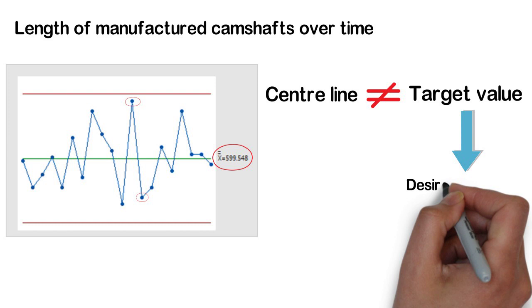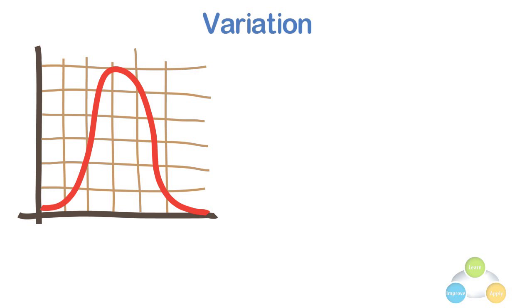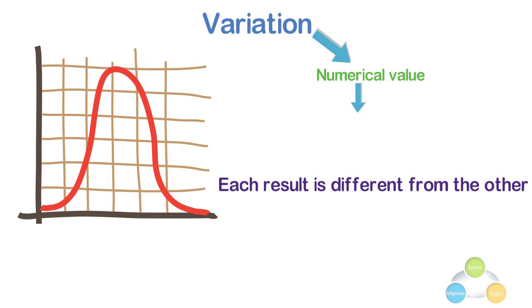Variation. Every piece of data which is measured will show some degree of variation. No matter how much we try, we would never attain identical results for two different situations. Each result will be different from the other. Variation may be defined as the numerical value used to indicate how widely individuals in a group vary.